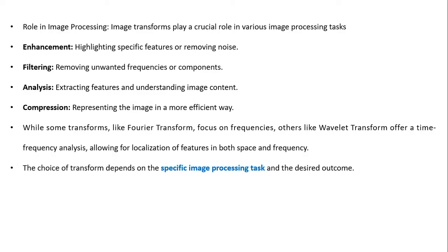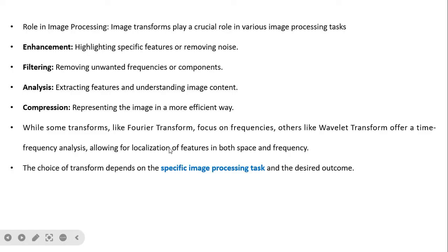Compression is another task — representing the image in a more efficient way. While some transforms like Fourier focus on frequencies, others like wavelet transform offer a time-frequency analysis, allowing for localization of features in both space and frequency. For example, Fourier transform works on the entire image at a global level, while some transforms work at the local level. The choice of transform depends on the specific image processing task and the desired outcome.